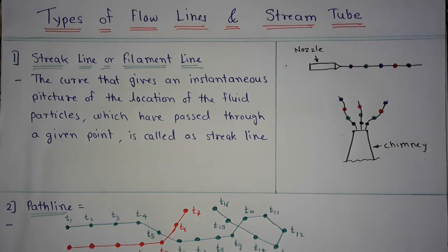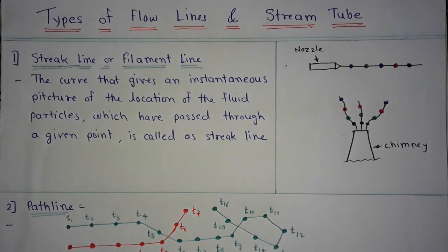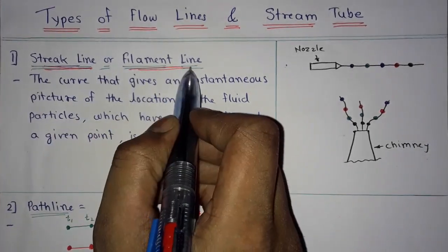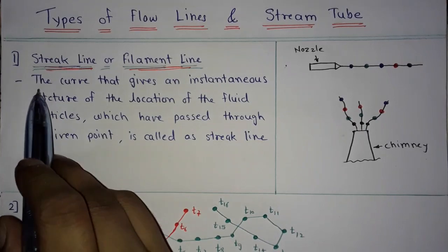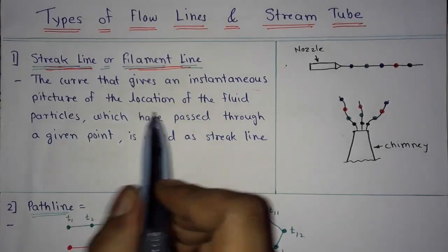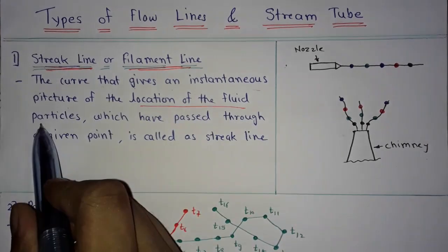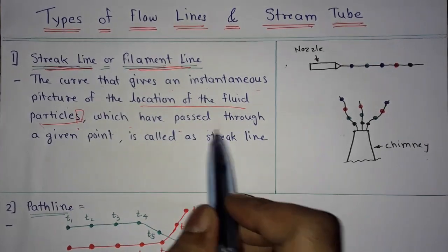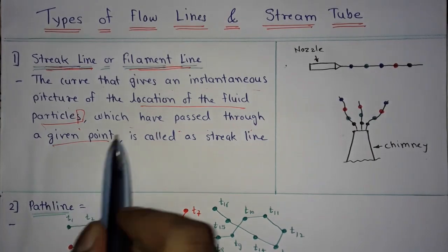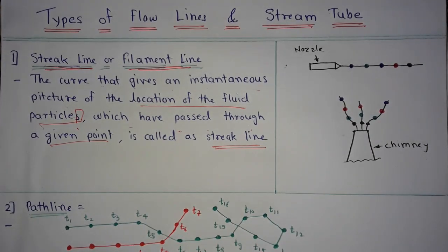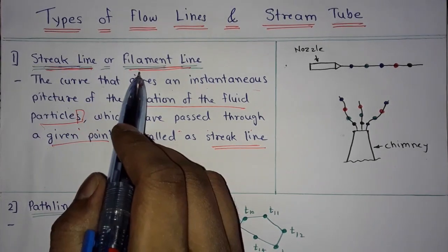First is streak line or filament line. The curve that gives an instantaneous picture of the location of fluid particles which have passed through a given point is called a streak line. Let's understand the streak line concept with an example.